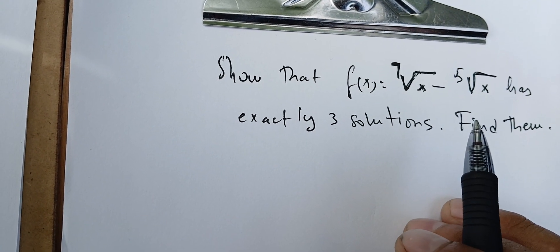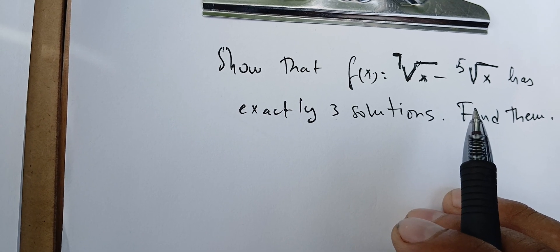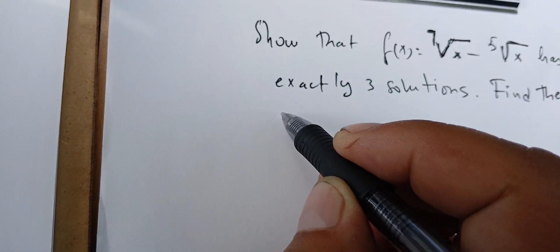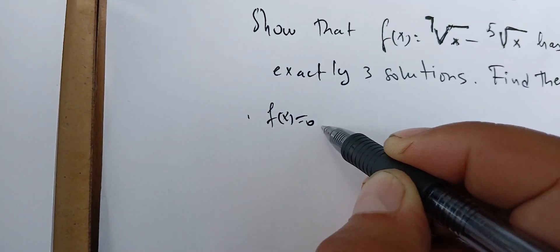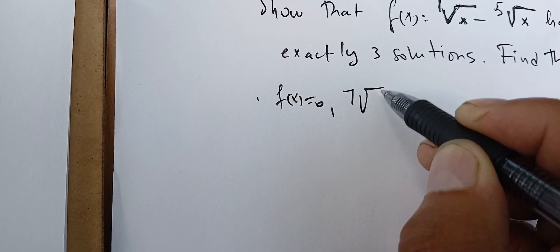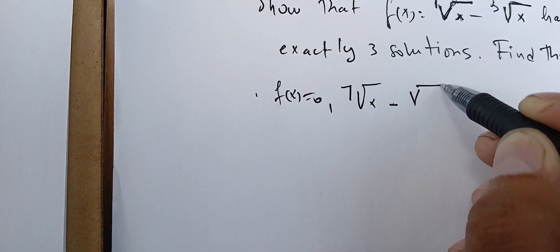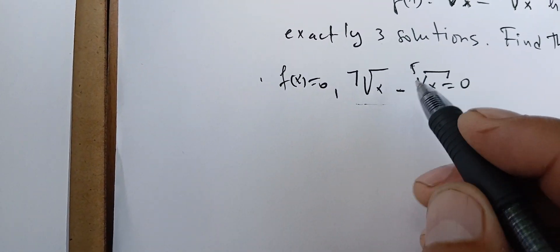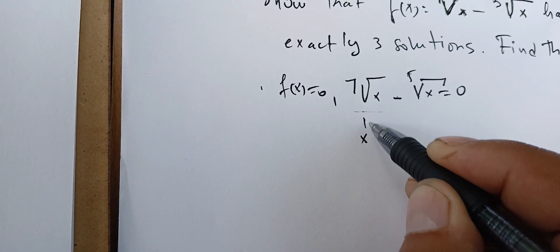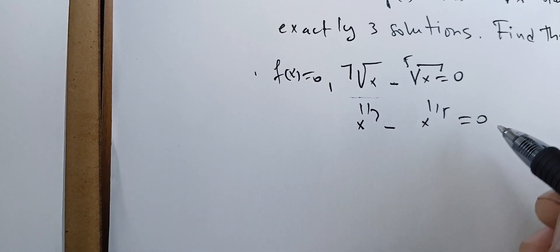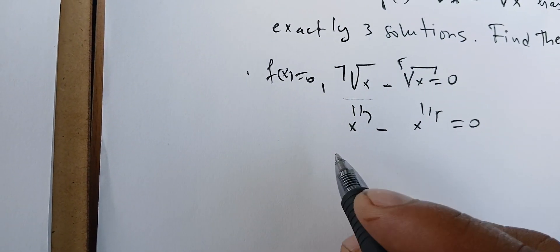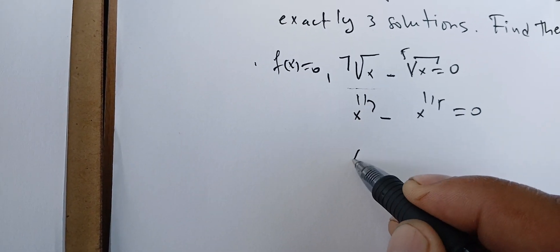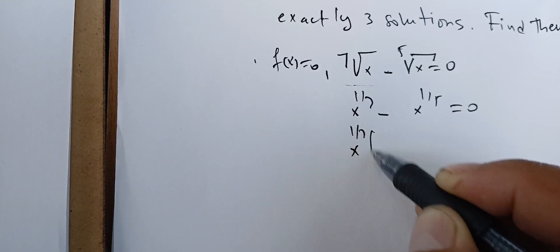The key idea here is that we can use factorization. To get the solutions, we need to solve f(x) = 0, which means this equation equals zero. We can rewrite it in power form as x to the one-fifth. Then we factor out by the smallest ratio, which is one over seven.